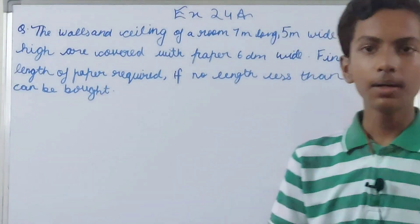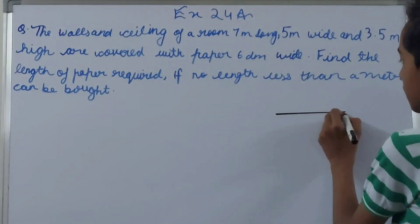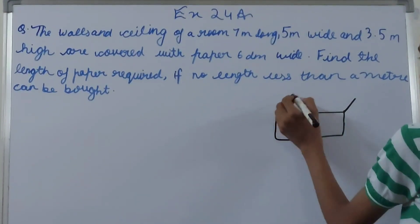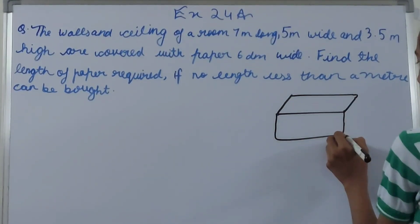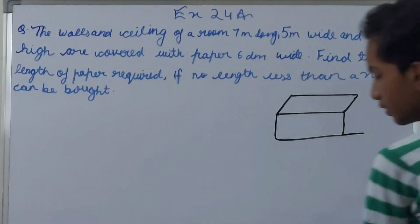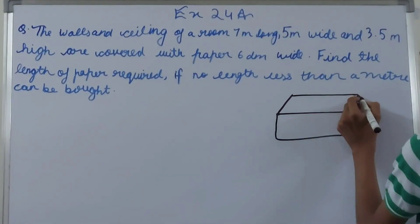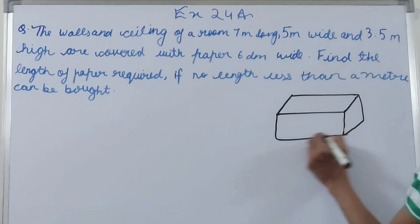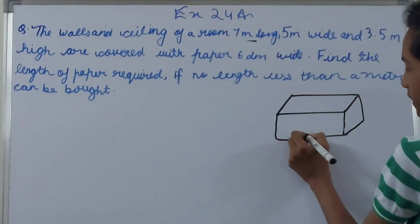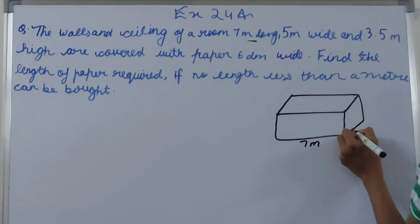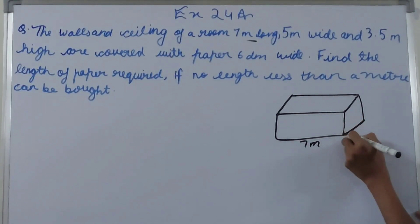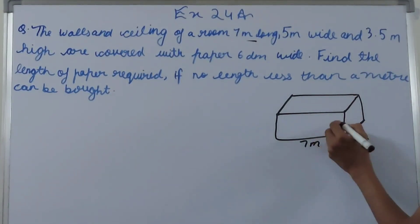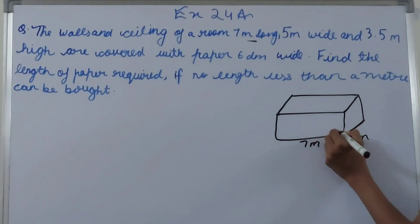Suppose this is the room here. The dimensions of the room are given to us. The length of the room is seven meters, the width is five meters, and the height is 3.5 meters.